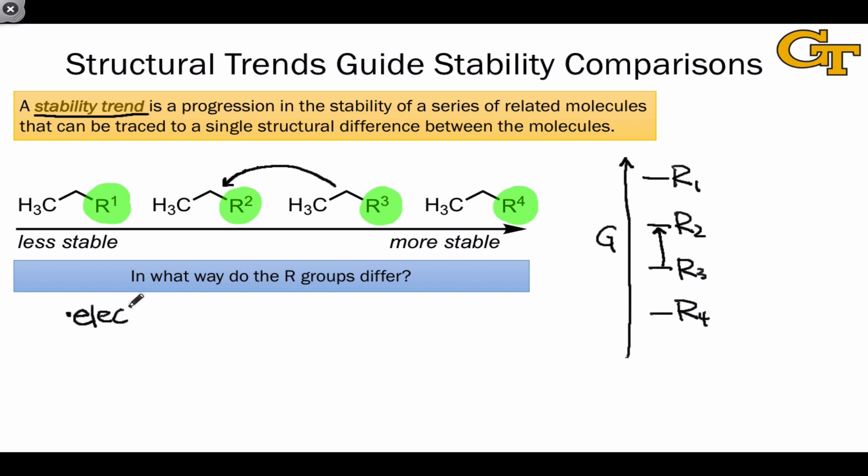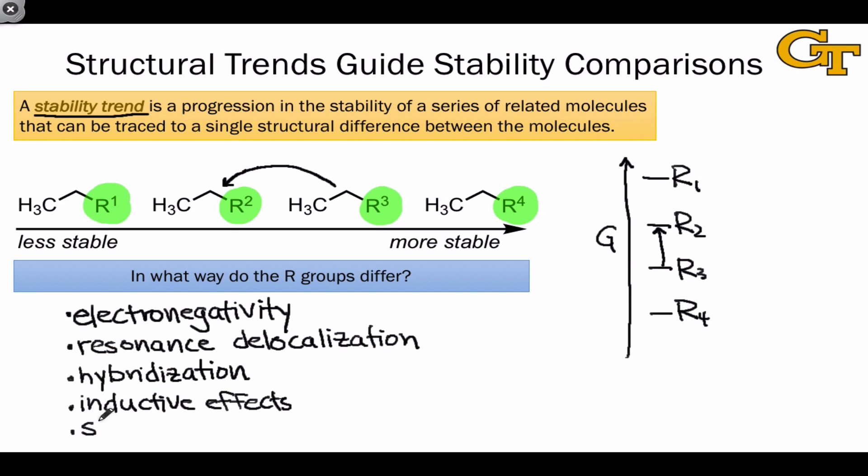In order of importance, we have electronegativity, especially for charge-bearing atoms, resonance delocalization, which is associated with the spreading of electrons. We might have a difference in whether a molecule is resonance active or not. Molecules can differ in hybridization, and this is especially important in contexts where a lone pair is reacting. Groups can differ in inductive effects or steric effects. These are by far the five most important stability factors, and we'll look at each in turn in the remainder of the videos in this series.